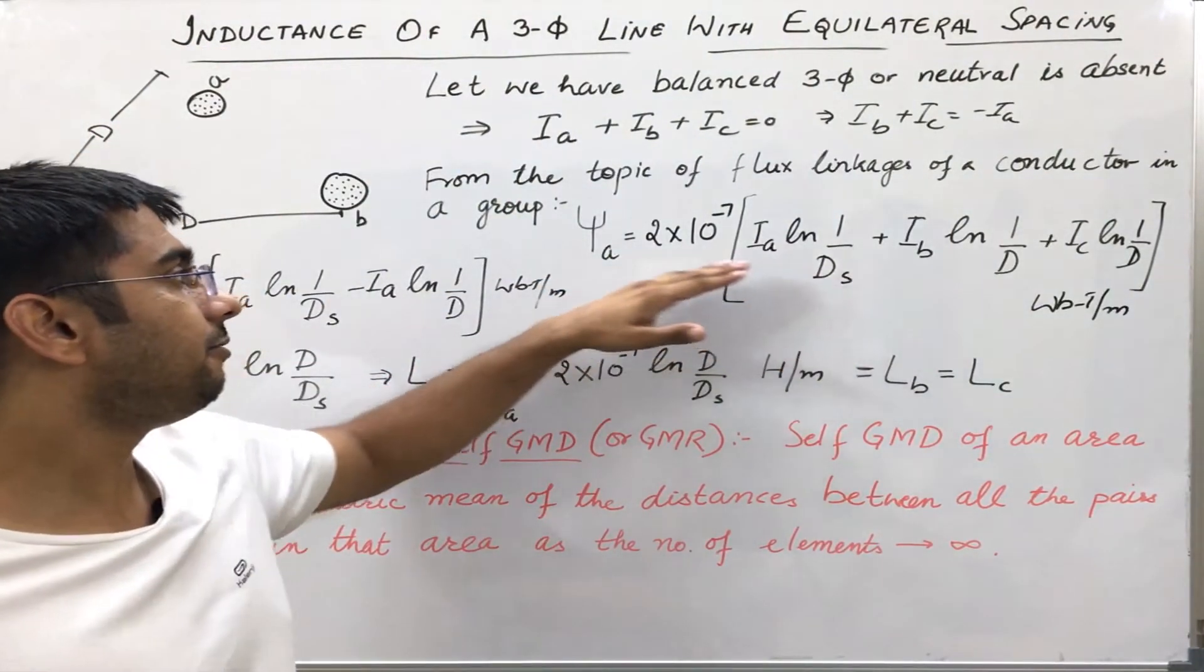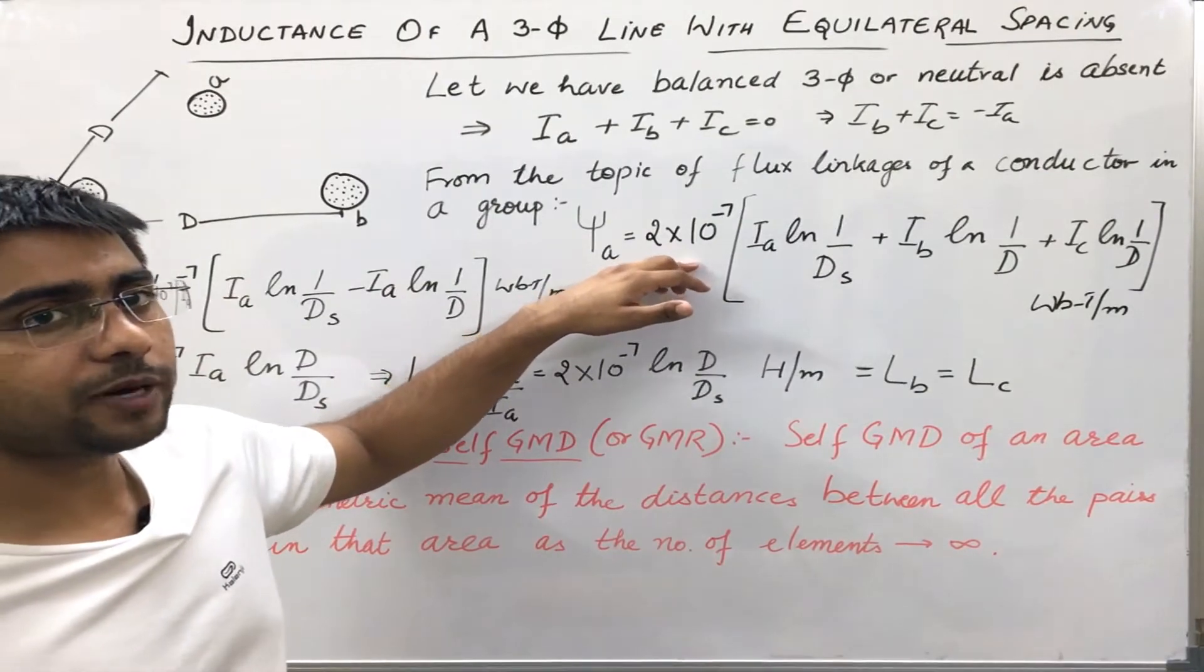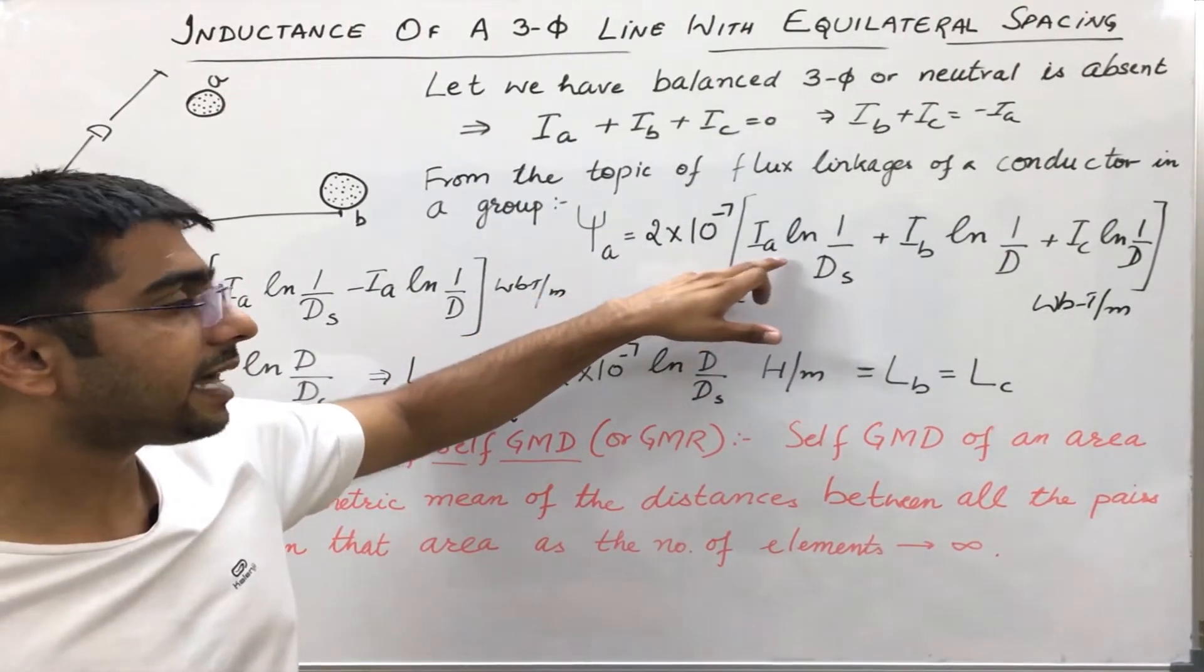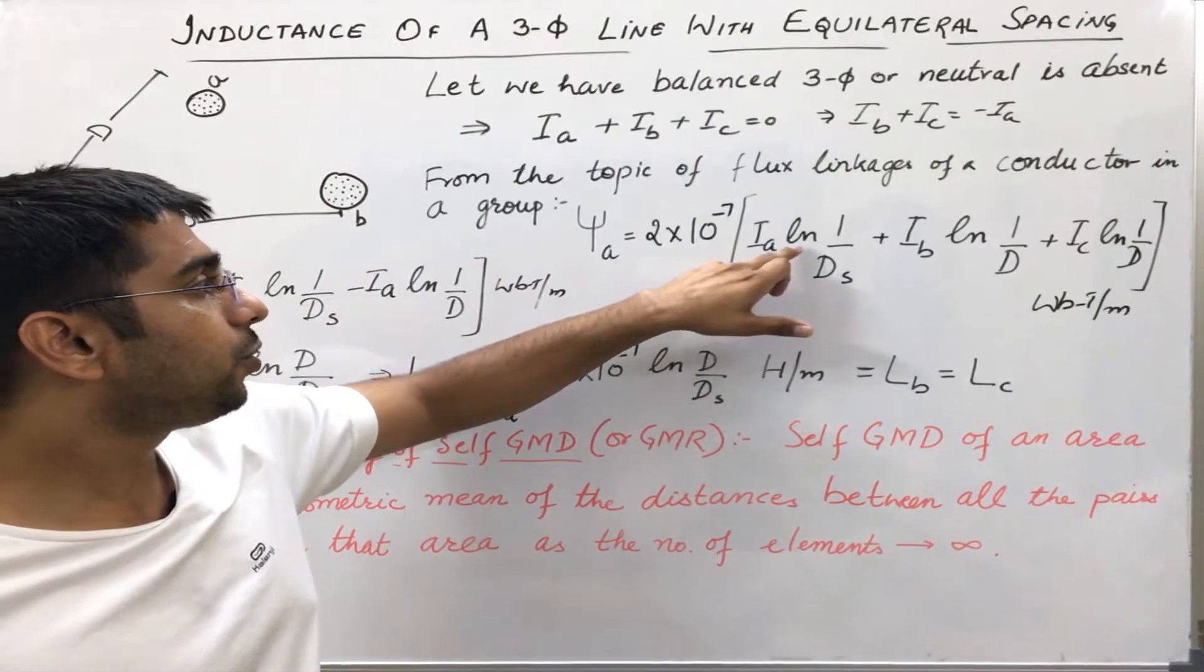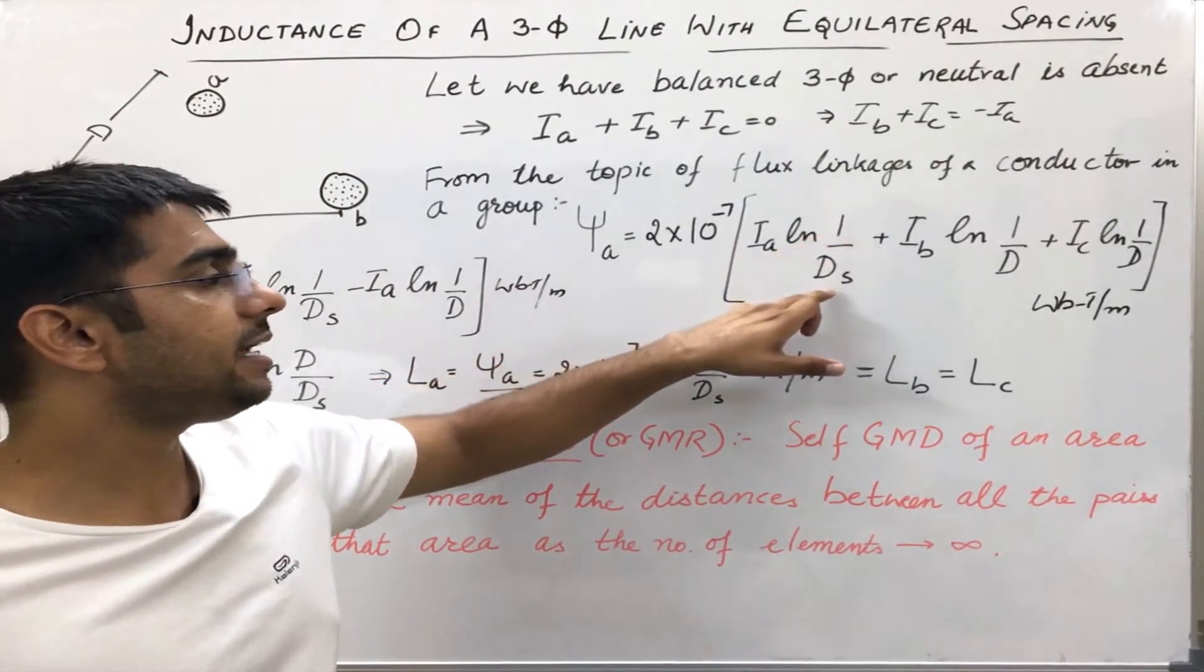The formula is 2 times 10 to the power minus 7, the current carried by the same conductor, into natural log 1 by ds.